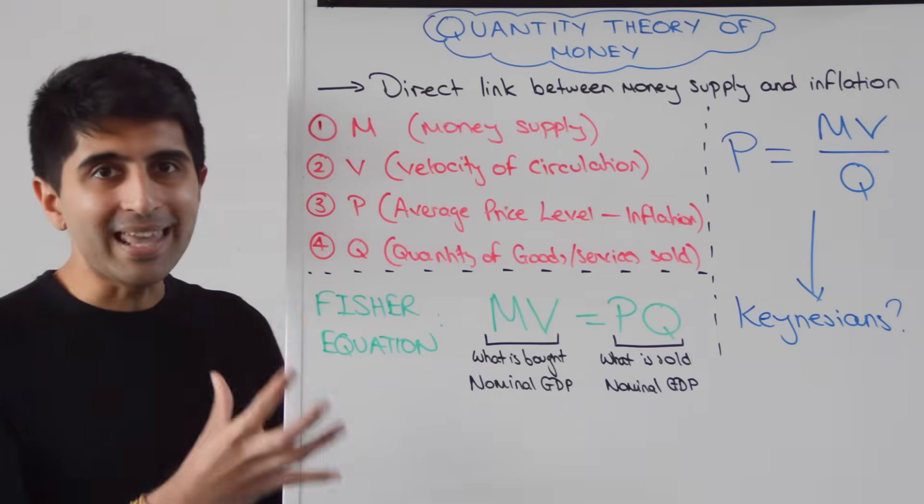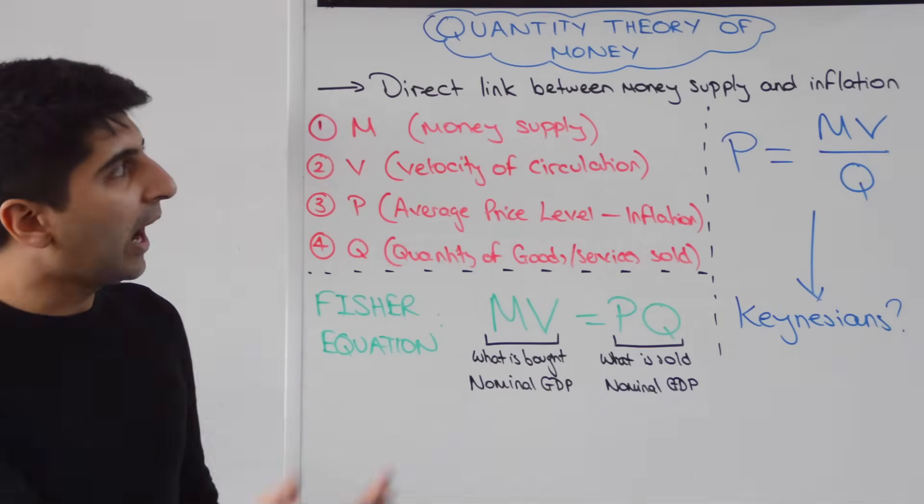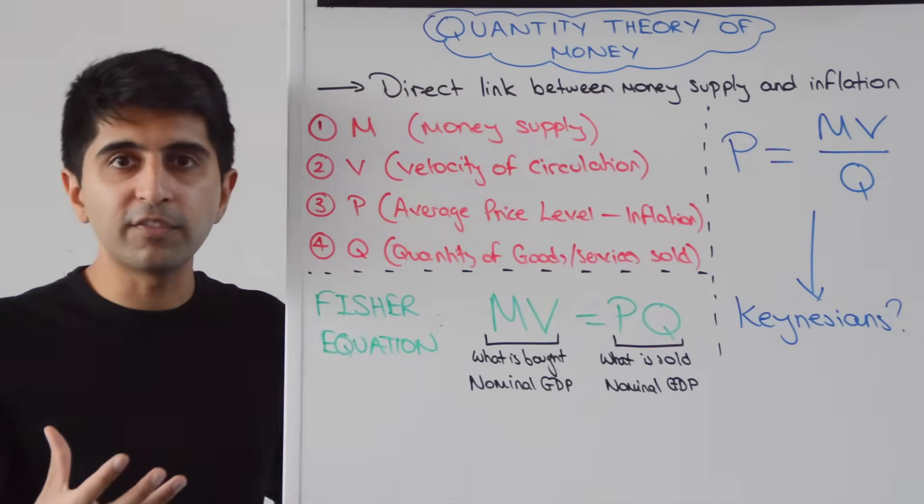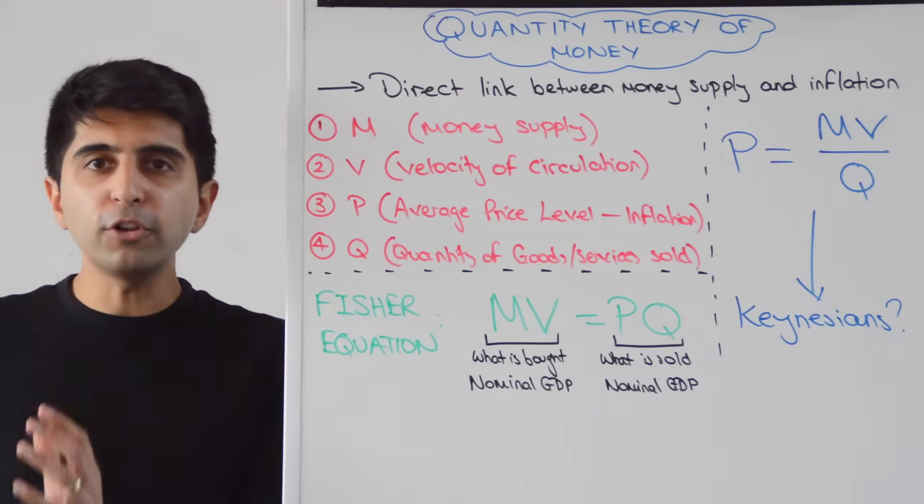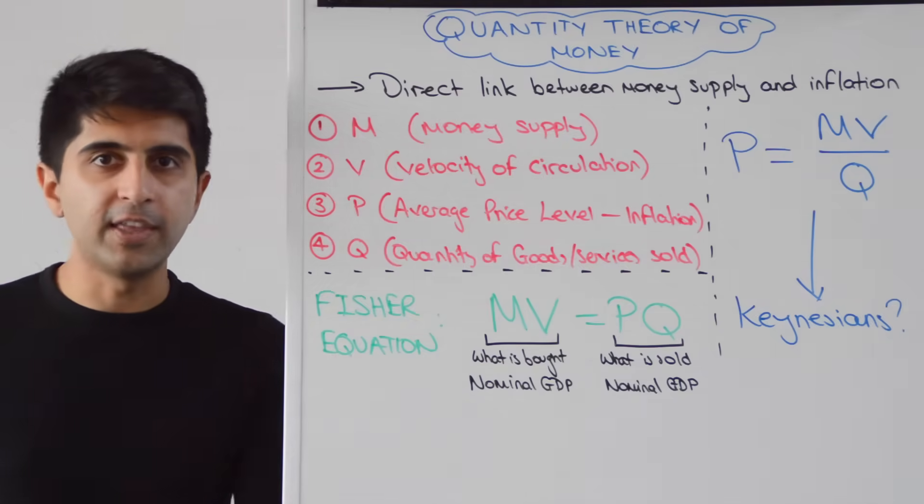So for monetarists, this is the reason why there is inflation, the primary cause of inflation. And that is because it is a theory that links the money supply to inflation, a direct link between the two. So monetarists say this is the only reason why there is inflation in the economy.